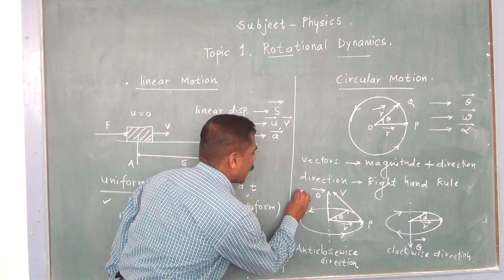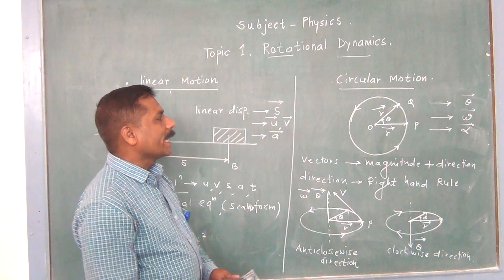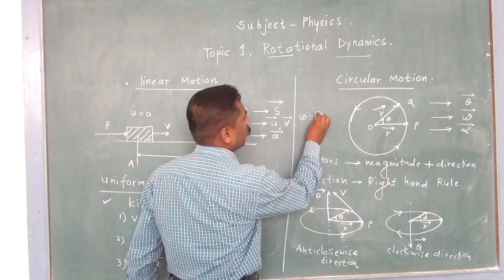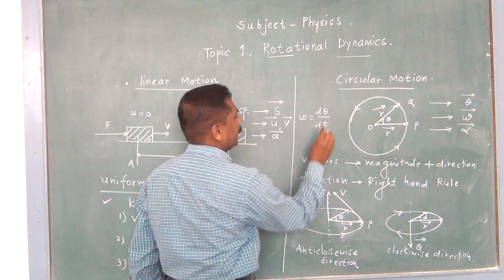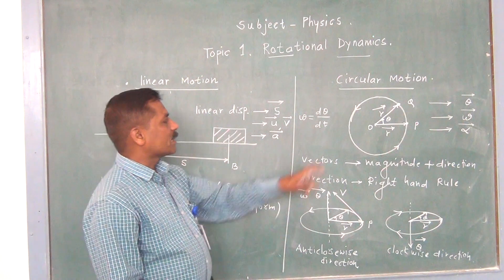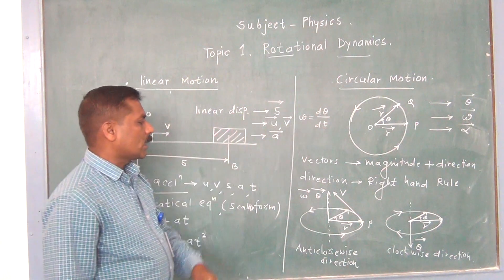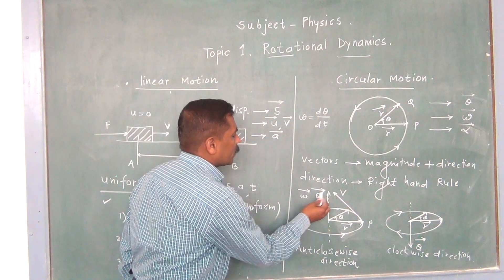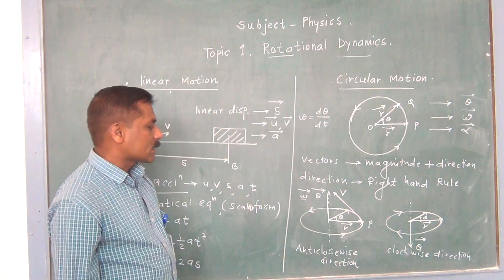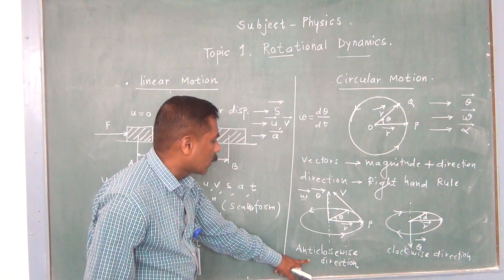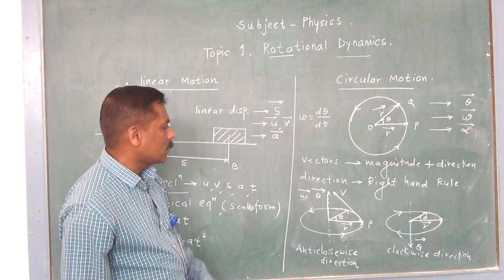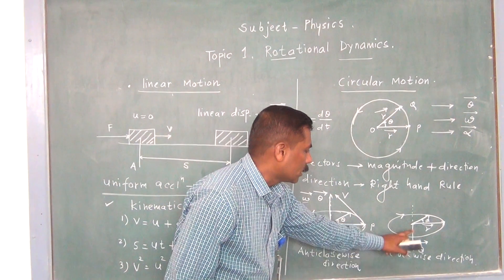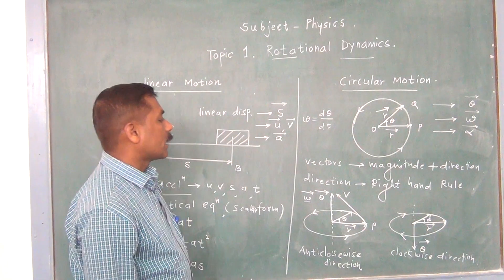Omega, that is the angular velocity, depends on the angular displacement because we know the formula omega is equal to d theta divided by dt. So the rate of change of angular displacement with respect to time is called the angular velocity. If the particle is moving in the anticlockwise sense, omega will be in the upward direction; if moving in the clockwise direction, omega will be in the downward direction.